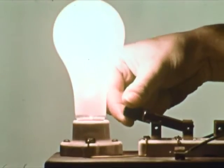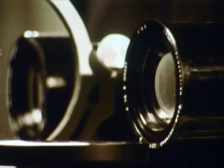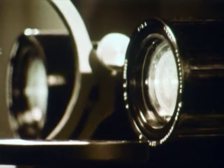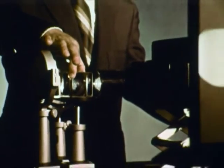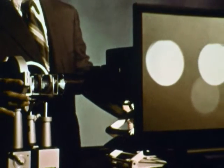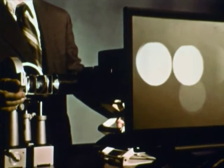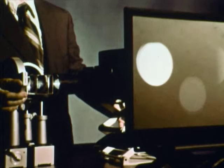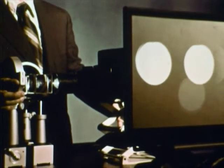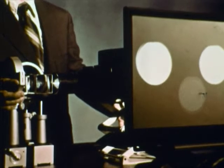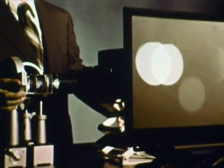Light also travels in waves. What happens when two light beams cross? Interference of light waves should produce bands of light and dark, but we see none. In general, when two white light beams cross, no visible interference pattern is produced.